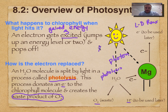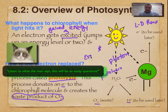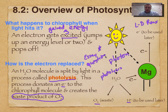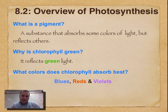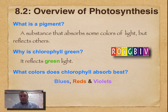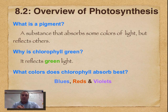Make note of this because it sounds like a short-answer question on your celebration of knowledge. Now, what's the definition of a pigment? A pigment is anything that absorbs some colors of light but reflects others. If you remember Roy G. Biv — your colors of the rainbow — a blue shirt looks blue because it absorbs all other colors except it reflects blue light back. So chlorophyll is green because it's absorbing all other colors but reflecting the green one.